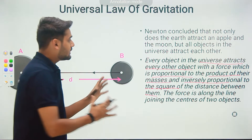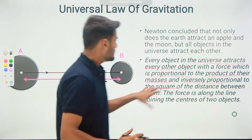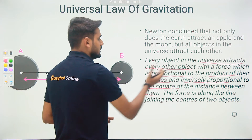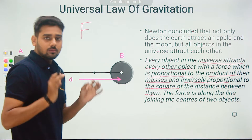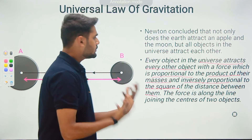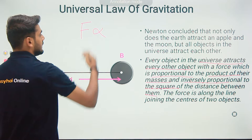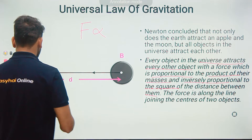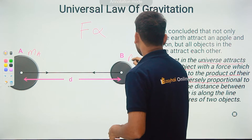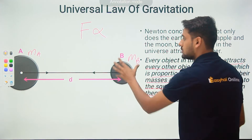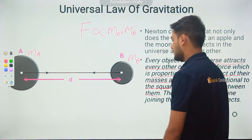This statement seems a little messy, but in reality it's very simple, and we will try to understand its mathematical meaning step by step. Every object attracts every other object with a force which is proportional to the product of their masses — meaning the gravitational force is directly proportional to the masses of the bodies. So if we have mass A (m_a) and mass B (m_b), we can write: F is directly proportional to m_a multiplied by m_b.